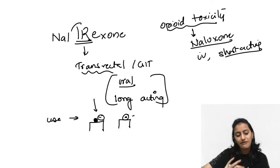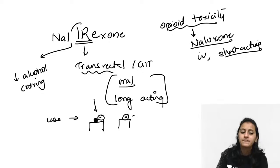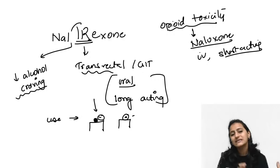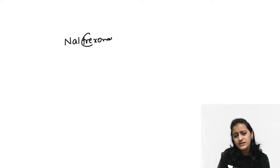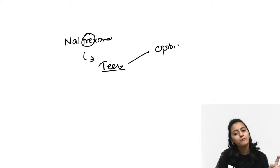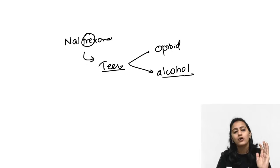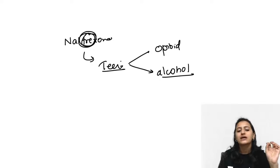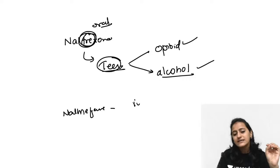Another very important point for naltrexone: it also decreases alcohol craving. Remember 'ek teer do nishan' — one drug, two targets: opioid addiction prevention AND alcohol craving reduction. Nalmefine is IV and long-acting. This is frequently asked: which drug decreases alcohol craving? Answer: naltrexone.